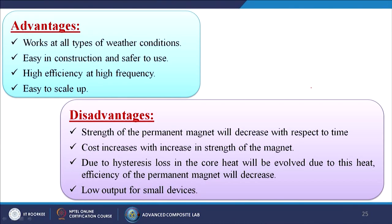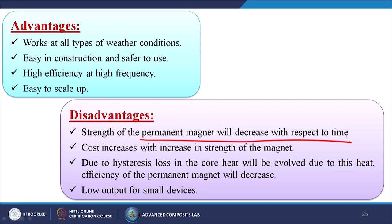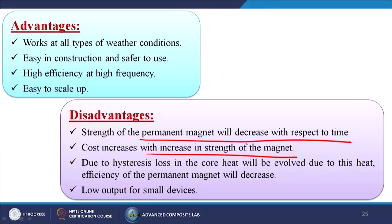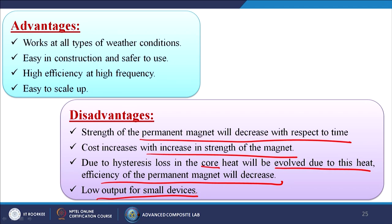What are the advantages of electromagnetic generators? They work at all types of weather conditions, are easy in construction, safer to use, have high efficiency at high frequency, and are easy to scale up. The disadvantages: strength of the permanent magnet decreases with time as it is an inherent property. After a certain time, the magnetic property can degrade. Cost increases with increase in magnet strength; due to hysteresis loss in the core, heat will be evolved, decreasing efficiency of the permanent magnet; and low output for small devices — a more powerful magnet is needed to generate more electricity.